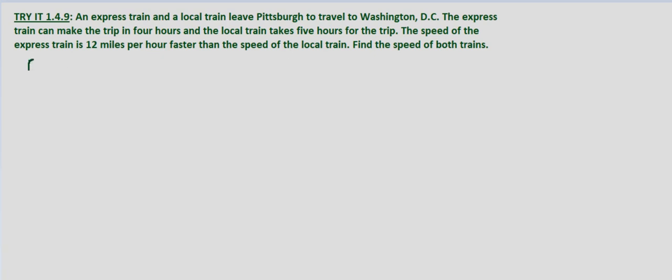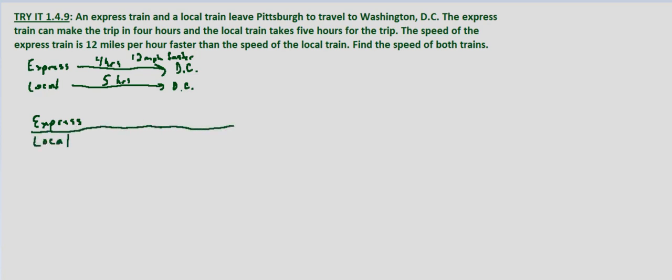If we've got the express train here it's going to DC in four hours and we're told it's 12 miles per hour faster. The local train is going the same place, it's going to DC, but it takes five hours. So let's set this up in a table. We've got the express train and we've got the local train and what do we know? Well let's look at the rate. Since the express train is faster we'll call the rate of the local train x.